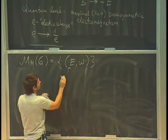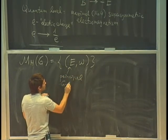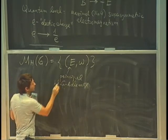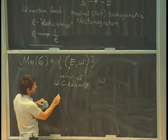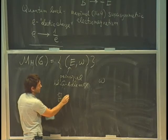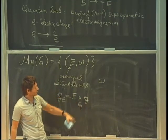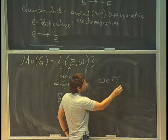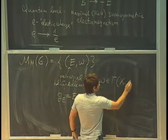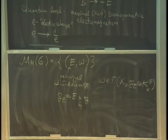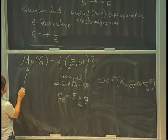The Hitchin moduli space M_H is the moduli space of Higgs pairs. A Higgs pair is (E, ω) where E is a principal G-bundle on X (holomorphic or algebraic) and ω is a section of g_E ⊗ K_X — that is, the bundle associated to E via the adjoint representation, tensored with the canonical line bundle of holomorphic one-forms on X. This manifold is hyperkähler — it has not just one complex structure but a whole P1 of complex structures, typically denoted I, J, K.